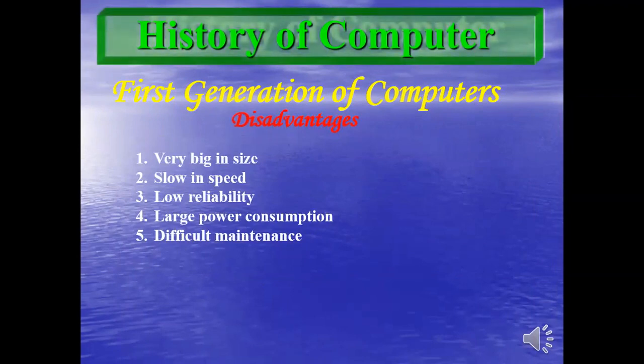Now the disadvantages of first generation computers. Number one: they were very big in size, as seen in the pictures — they had to be accommodated in very large halls and rooms. Number two: they were slow in speed. Number three: they had low reliability — people could not rely on them because they were very slow.